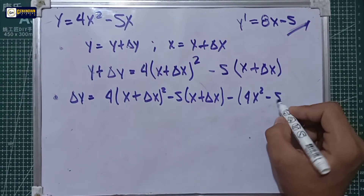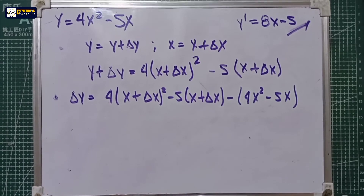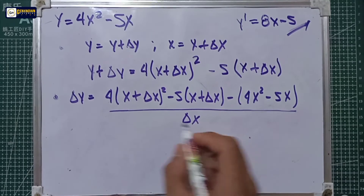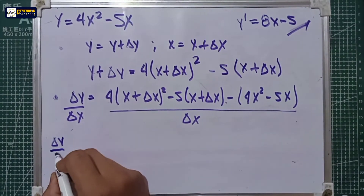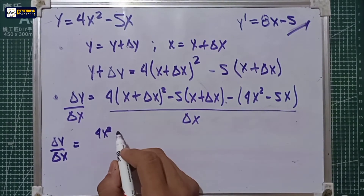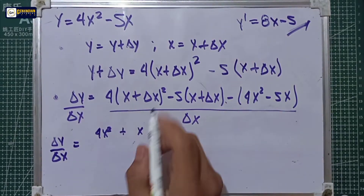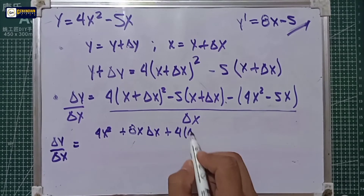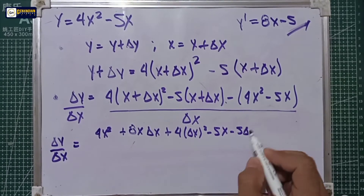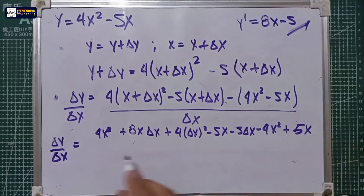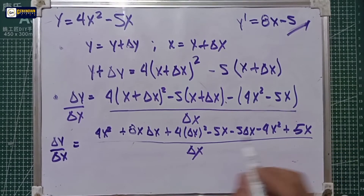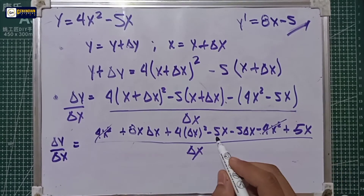Step number three: divide both sides by delta x. We can simplify this in step three already so step four is easier. Expanding: delta y over delta x equals 4x squared plus 8x·delta x plus 4·delta x squared minus 5x minus 5·delta x minus 4x squared, plus 5x, all over delta x. After cancellation, the 4x squared terms cancel, and the negative 5x and positive 5x cancel.